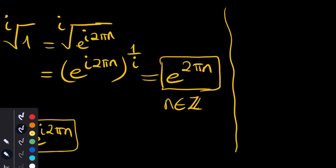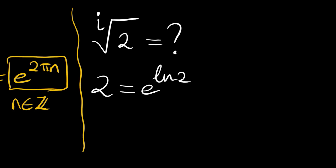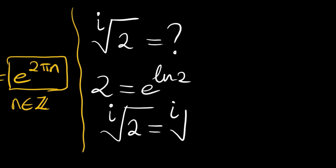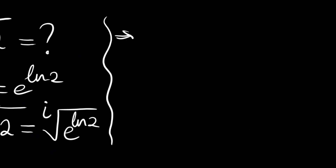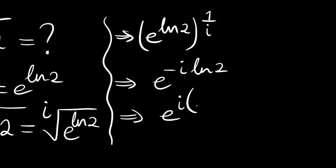The second part is the ith root of 2. Now 2 is equal to e to the power of ln 2, so the ith root of 2 is equal to the ith root of e to the power of ln 2. This is again e to the power of ln 2 to the power of one over i. Now this one over i is equal to negative i, so we have e to the power of negative i times ln 2, or e to the power of i times negative ln 2.